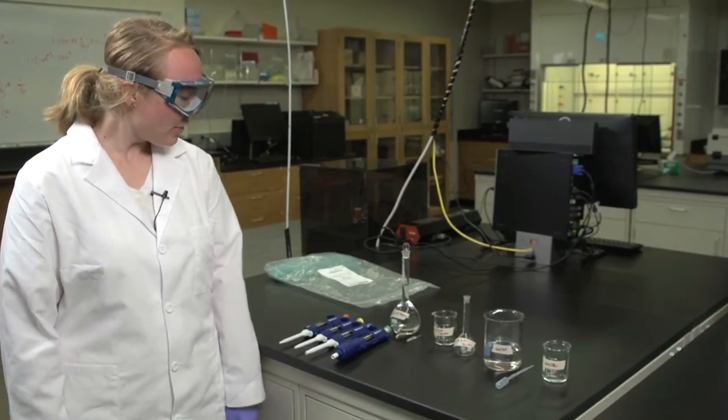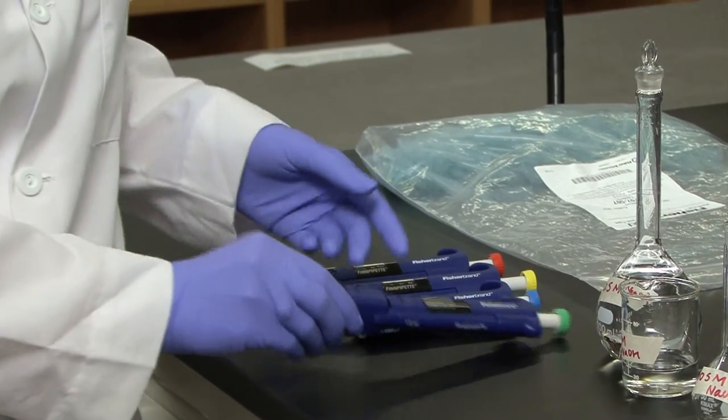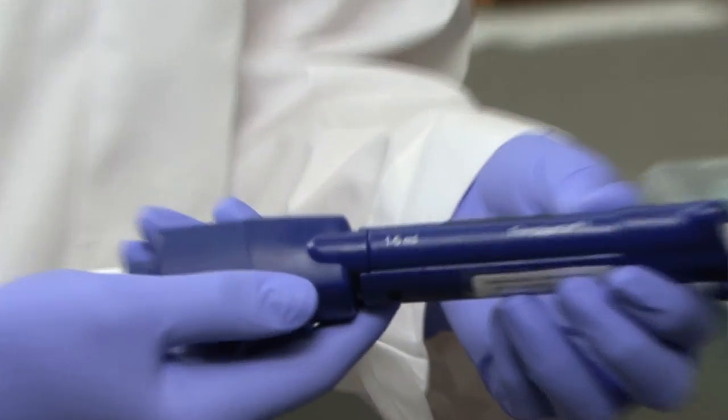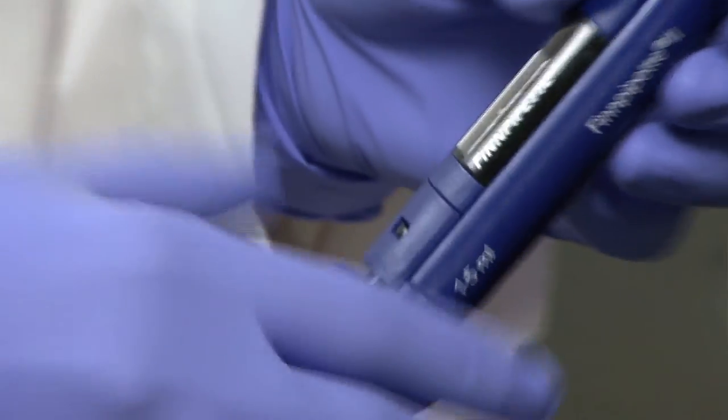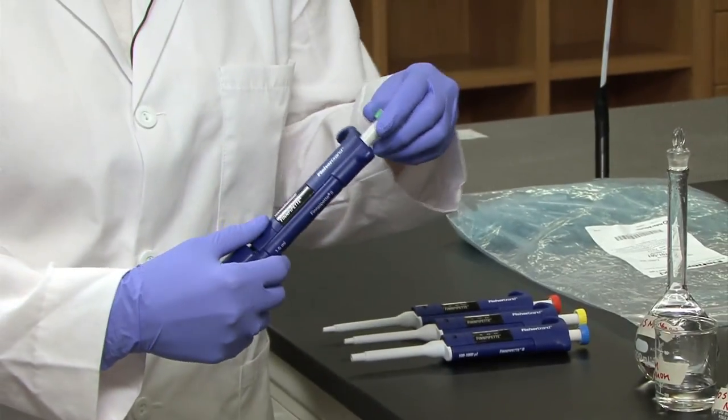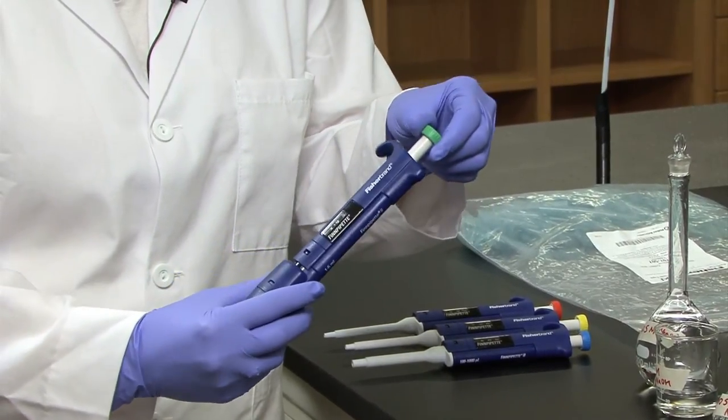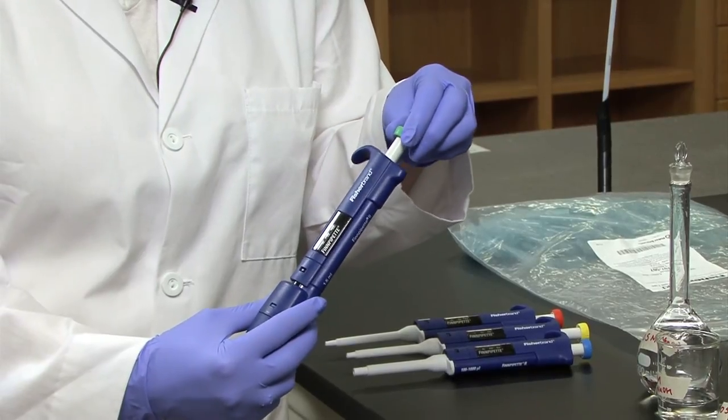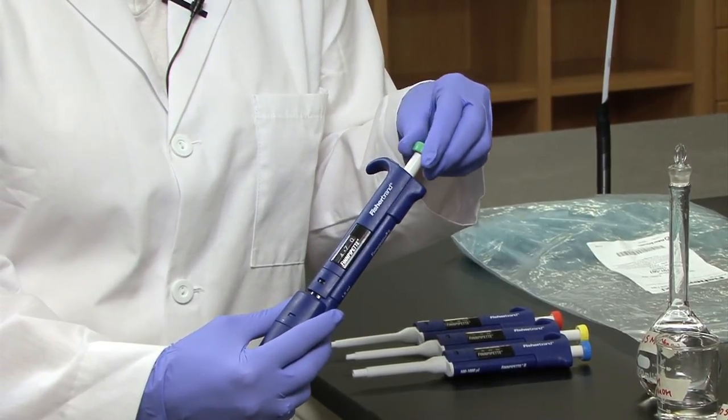Today I am going to demonstrate how to use a micropipette. These are the micropipettes. We have got a lot of different sizes. This one is the 1 to 5 milliliter micropipette. Note that you can change the dial in increments of 5 by twisting this knob on the top.